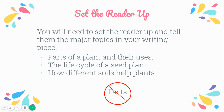Okay, then you've got to set up your readers. When you're writing your introduction, you'll need to set the reader up and tell them the major topics in your writing piece. The major topics you can use according to the packet are: the parts of a plant and their uses, the life cycle of a seed plant, and how different soils help plants. Do not include facts.